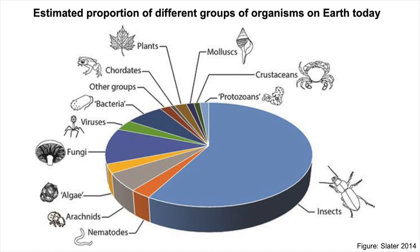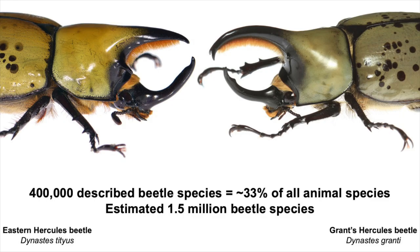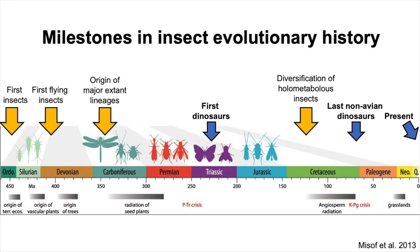Notice in this figure the estimated proportion of insect species — the large blue section — especially compared to chordates, essentially the vertebrates, that tiny sliver in gray. Insects are by far the most diverse group of animals. Within insects, the group with the most diversity is beetles — beetles alone account for more than 400,000 described species, and we estimate the true richness of beetles is on the order of 1.5 million species. This incredible diversity makes good sense considering the small size of insects and their corresponding ability to divide an ecosystem into very small niches. Insects are also ancient and have been present on Earth for many of the big milestones of terrestrial ecosystems.